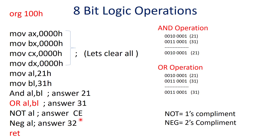In the next instruction, negation is 2's complement. So you first negate it — when you do the 1's complement of CE, it becomes 31. If you then add 1, it becomes 32. So this is how you can perform the logical operations using 8-bit numbers.